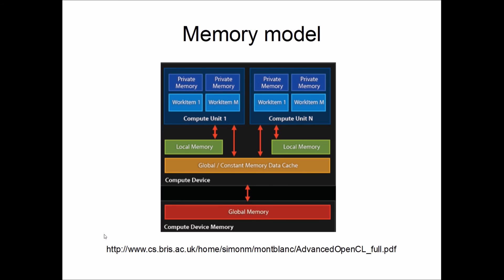This is a diagram that demonstrates it quite well. You've got your private memory, which each work item has — it's the fastest memory that a work item can access. Then you've got a work group consisting of multiple work items that each share some local memory, and you've got another cache layer. Then you've got your actual global memory that all the work items executing a kernel can access, and that's the only thing that the host can interchange with — we can only access from global memory.